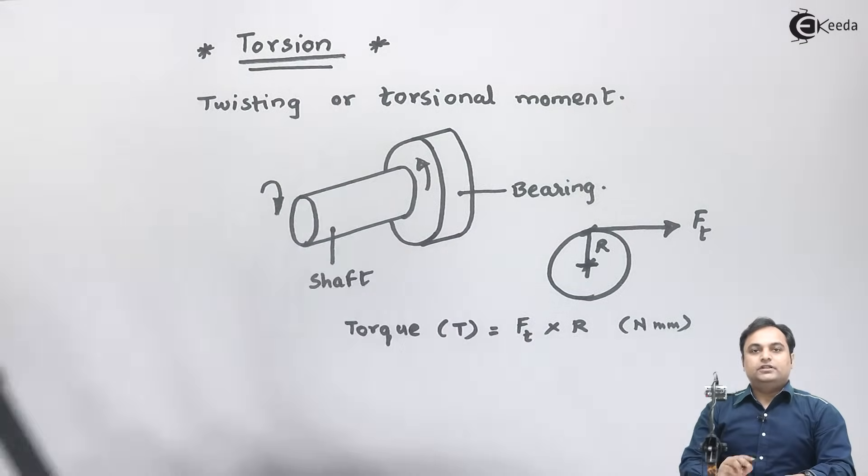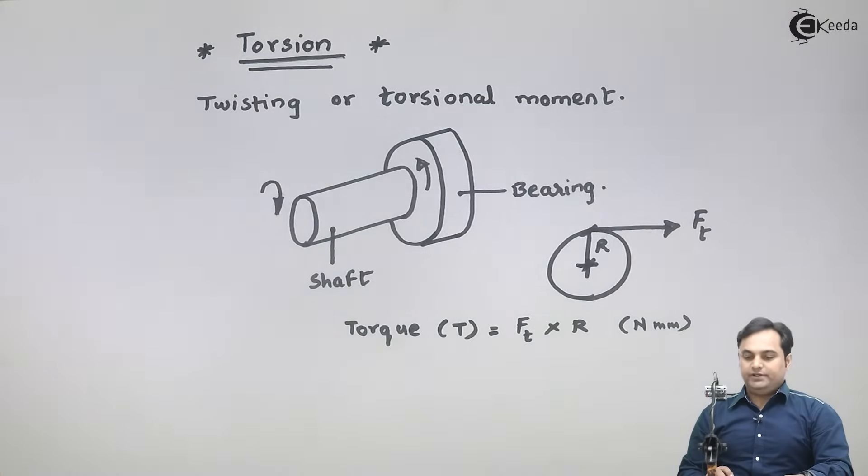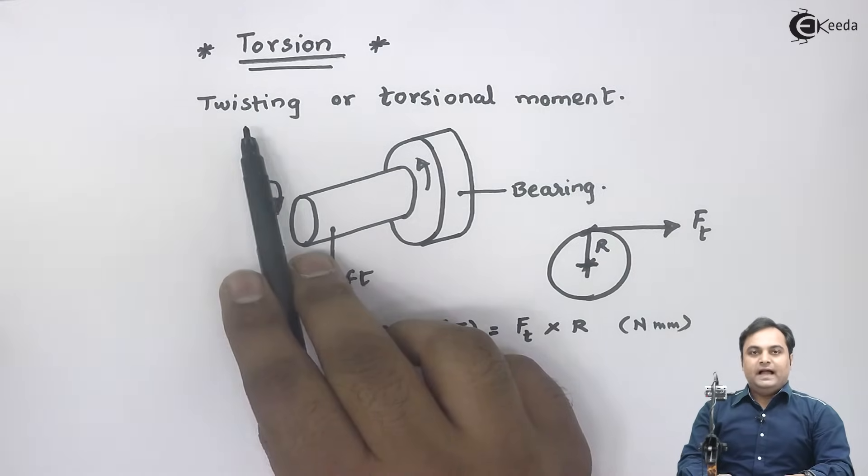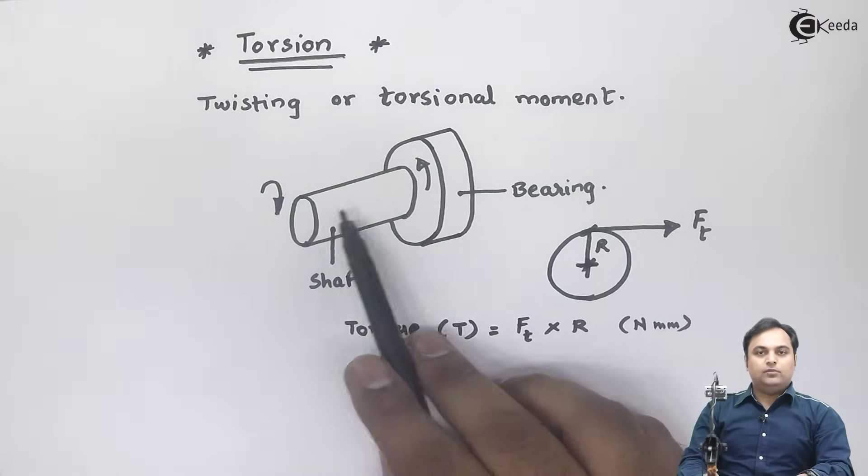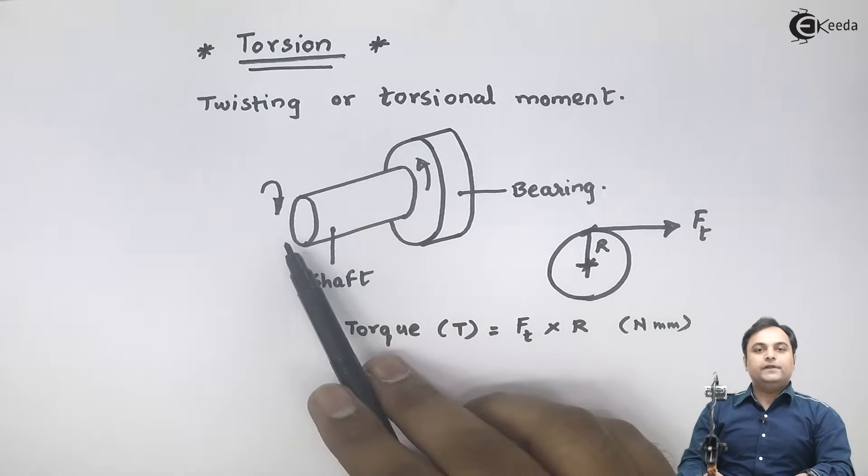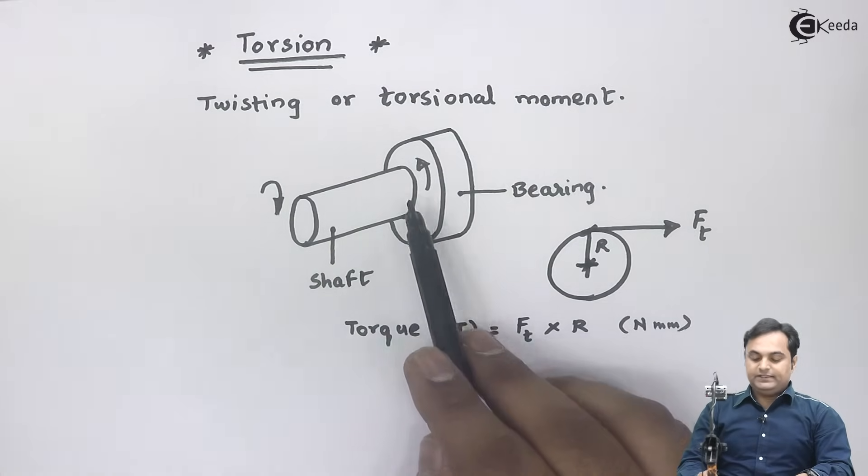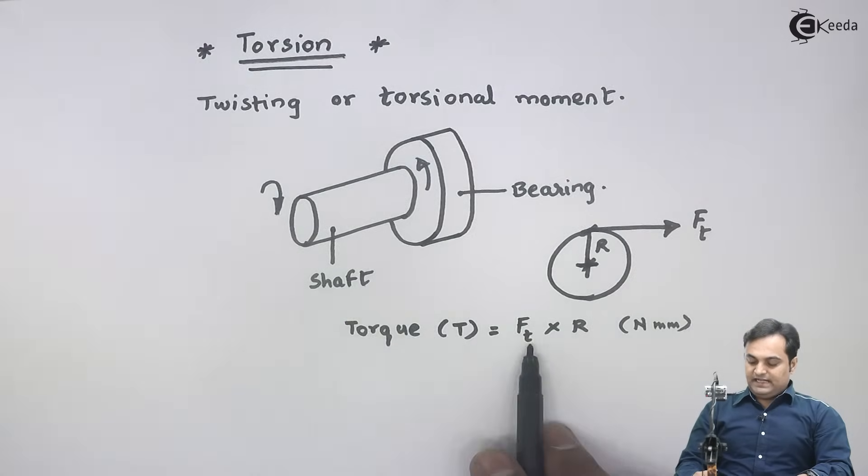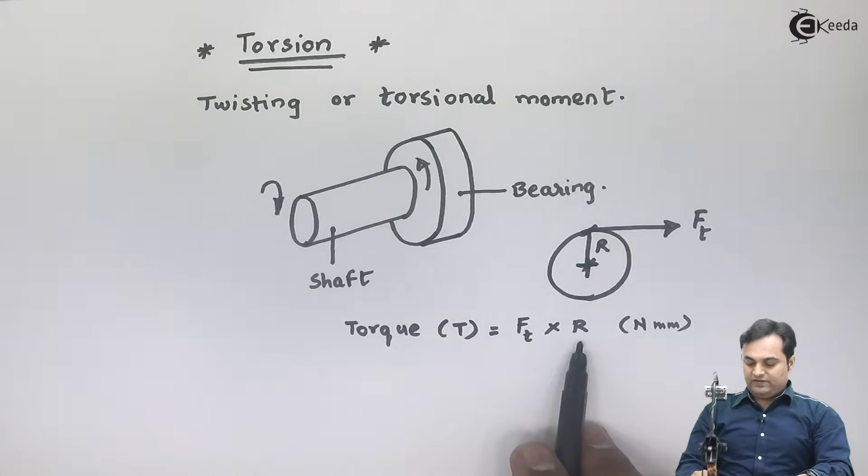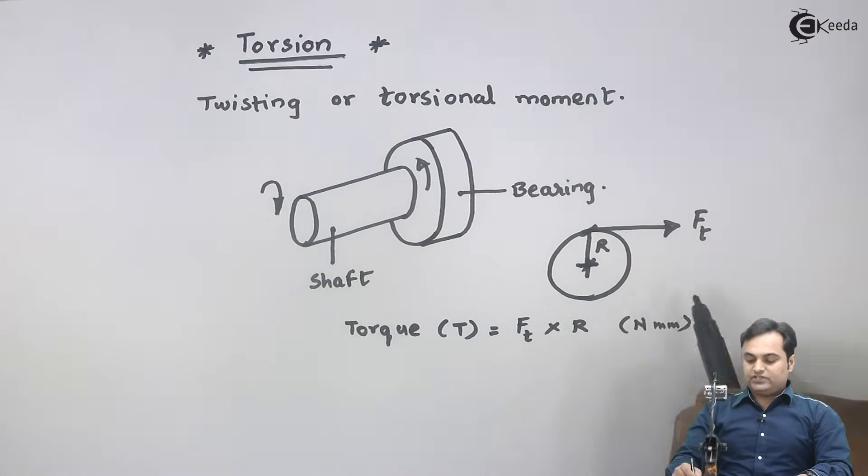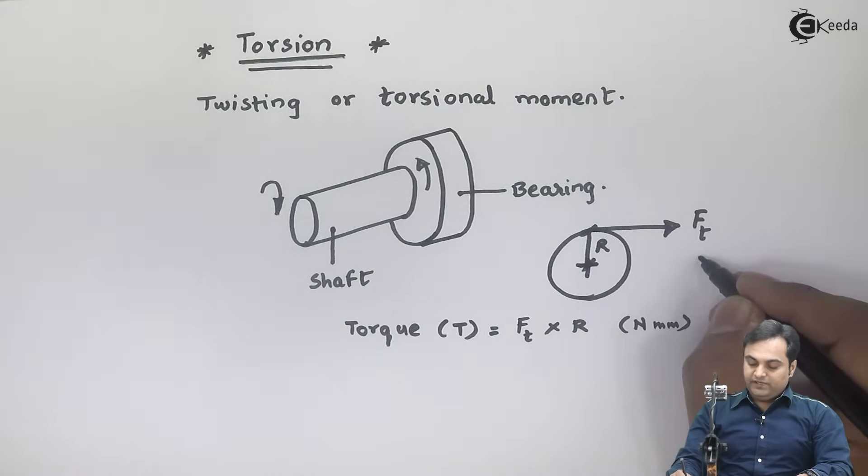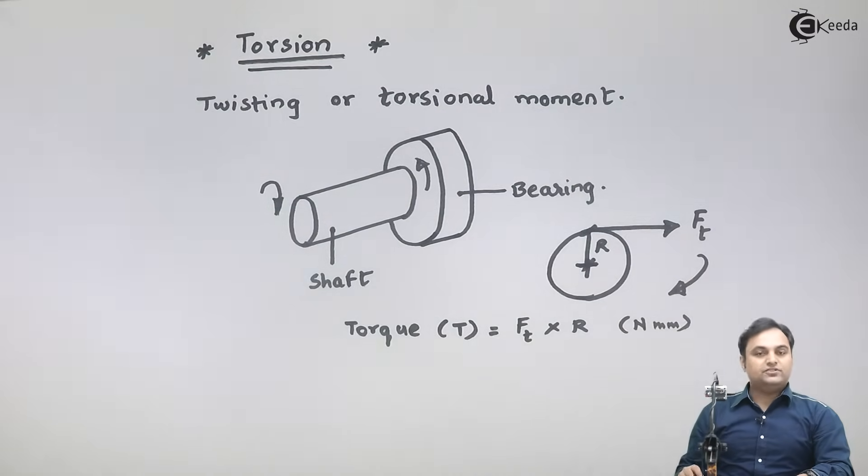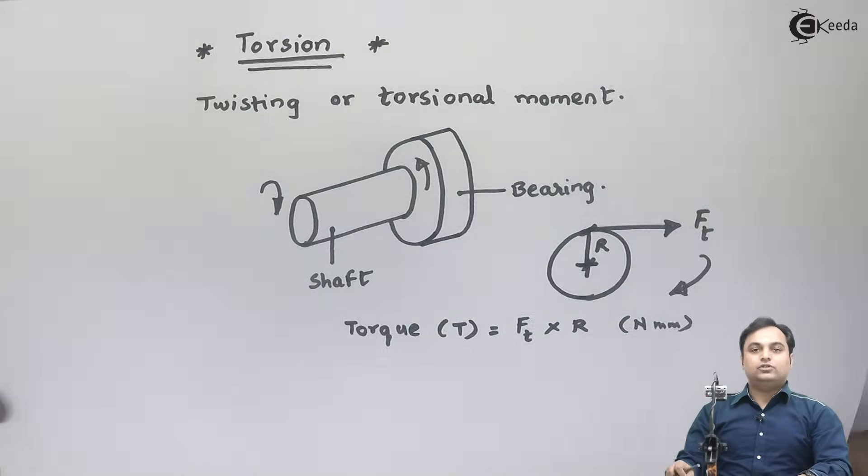So in other words, whenever we talk about torsion, the simplest way to understand torsion is that it is twisting, and twisting is produced by two unequal moments, one in clockwise direction and the other in anti-clockwise direction. Simply we can give torque as tangential force into the radius of the shaft. This product gives a rotation in the direction of Ft. So this was a brief concept regarding torsion. Now let me give you the torsional equation.